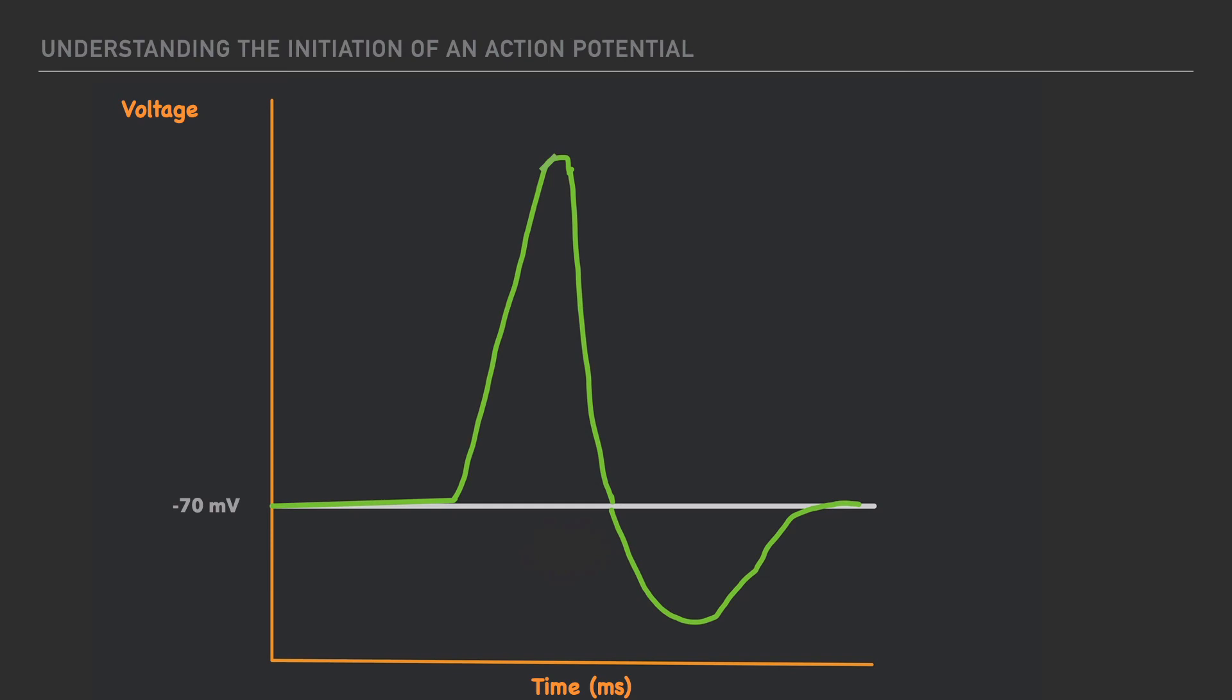So for example, if we start at a resting membrane potential of negative 70 millivolts, a stimulus that's less than, say, 75 millivolts won't elicit a response. What generally must take place is that the initial stimulus needs to be higher than the resting value. And we generally refer to this as the threshold stimulus, which is right around negative 55 millivolts.